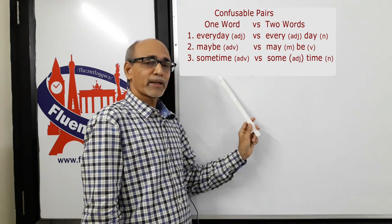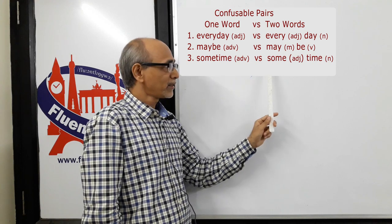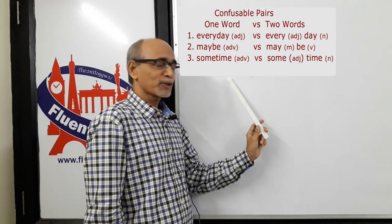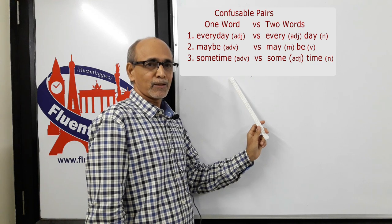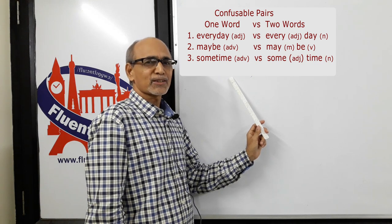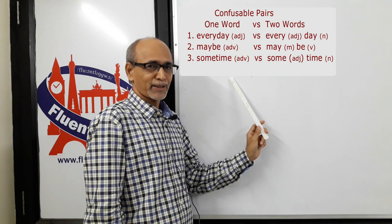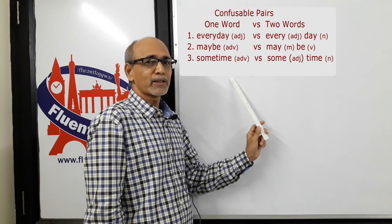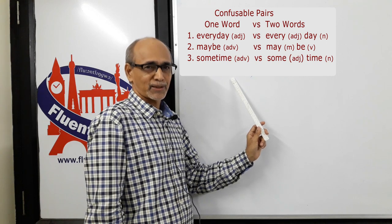The third pair is 'sometime' as one word and 'some time' as two words. 'Sometime' as one word is an adverb. For example, 'visit us sometime.' When you say that, you are telling a person to visit you at a time which is not specified or not certain.